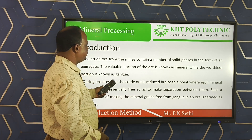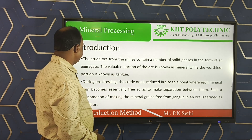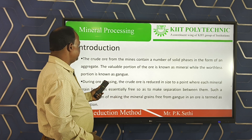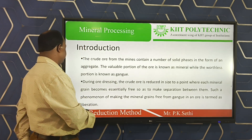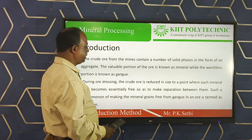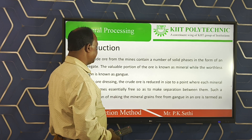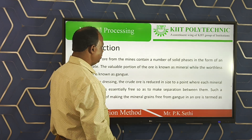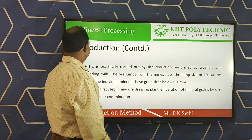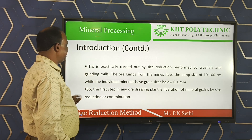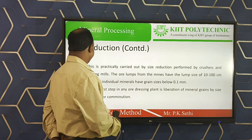The valuable portion of ore is known as the mineral, while the worthless portion is known as the gangue. These gangues should be separated from the minerals by the size reduction process. During the ore dressing process, the crude ore is reduced in size to a point where each mineral grain becomes essentially free, so as to make separation between them. Such a phenomenon of freeing mineral grains from gangue in an ore is called liberation. The first step of any ore dressing plant is liberation of mineral grains by size reduction.